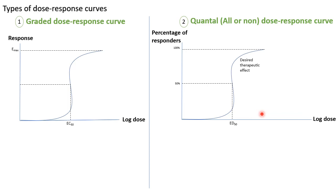So the two types of dose-response curves are: the graded dose-response curve and the quantal or all-or-none dose-response curve.